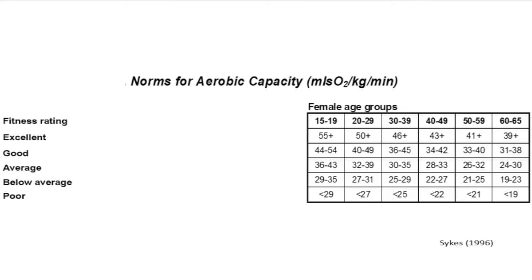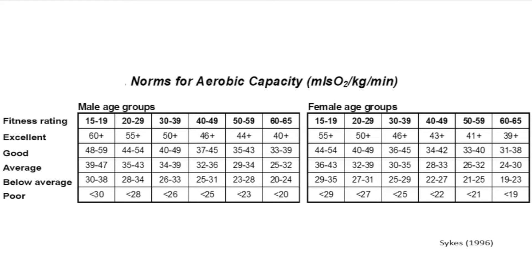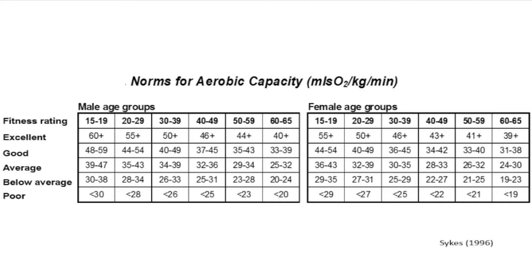Similar norms exist for females, again from 15 to 19 right through to 60 to 65 and beyond. Comparing the two sets is interesting: a 30 to 39 year old male in excellent condition would achieve an aerobic capacity of at least 50 ml per kilogram, whereas comparably a female in the same age group would achieve around 46 ml per kilogram — about 10% lower. Females generally, as a population, are around 10% lower than the average male, largely because women tend to have smaller hearts, smaller muscle groups, and smaller lung capacities.